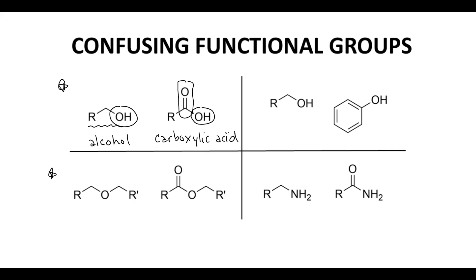To the bottom left, we have a functional group where two groups are connected to an oxygen — this is an ether. But just to the right, we have the same kind of situation, except one of the groups next to the ether oxygen is now a carbonyl. In that specific case, this is no longer just an ether; it is an ester. We don't want to break a functional group down into too small a part, because we will miss the larger story of all those parts together. So that's the ether versus the ester.